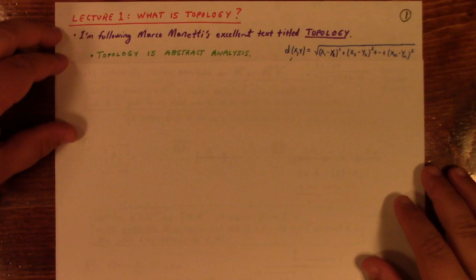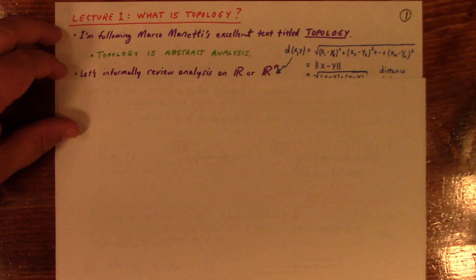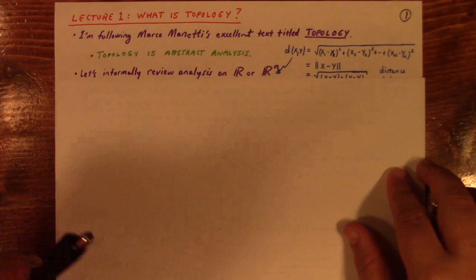But before we get into that, we're just going to take a walk down memory lane and look at what we know from regular analysis on Euclidean space. Let's informally review analysis on R^N. The key thing that makes R^N Euclidean space is the way we understand distance between points with the distance formula.